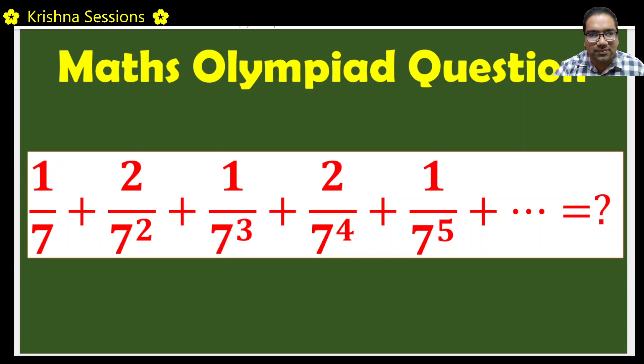Sum of this series. Here it looks like it is in geometric series but it is not directly in geometric series also. It is not 1 by 7 plus 1 by 7 square plus 1 by 7 cube plus 1 by 7 power 4. It is not like that.